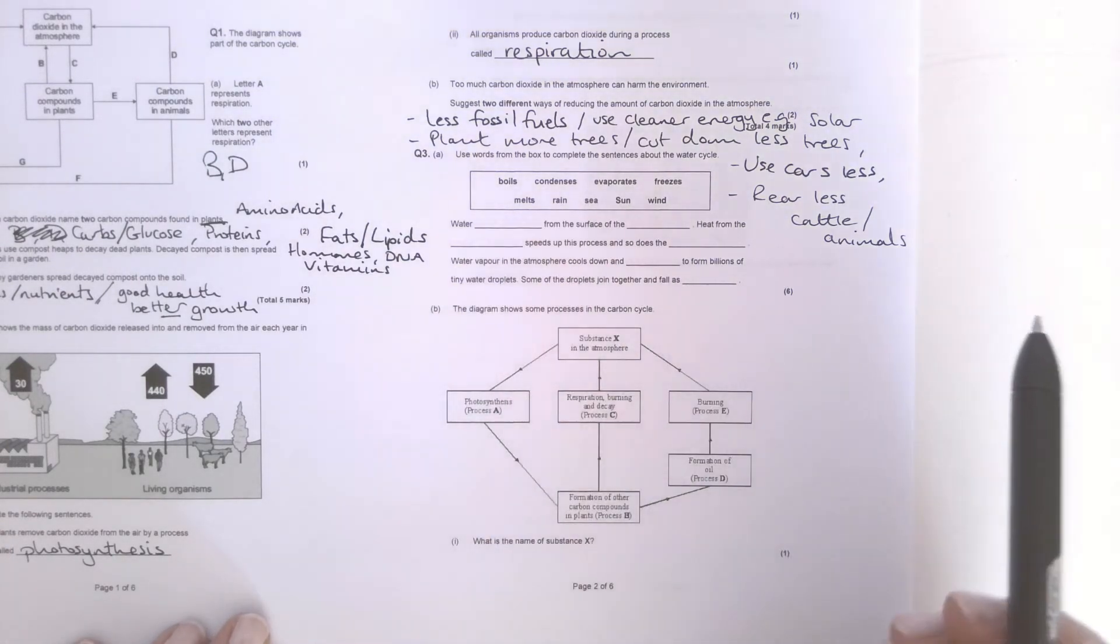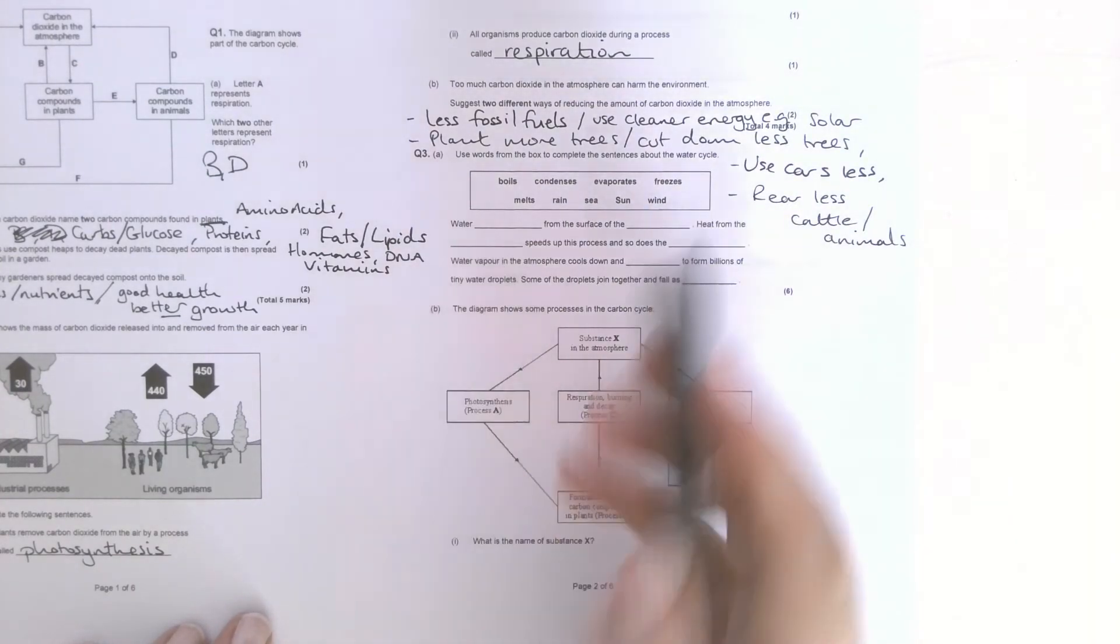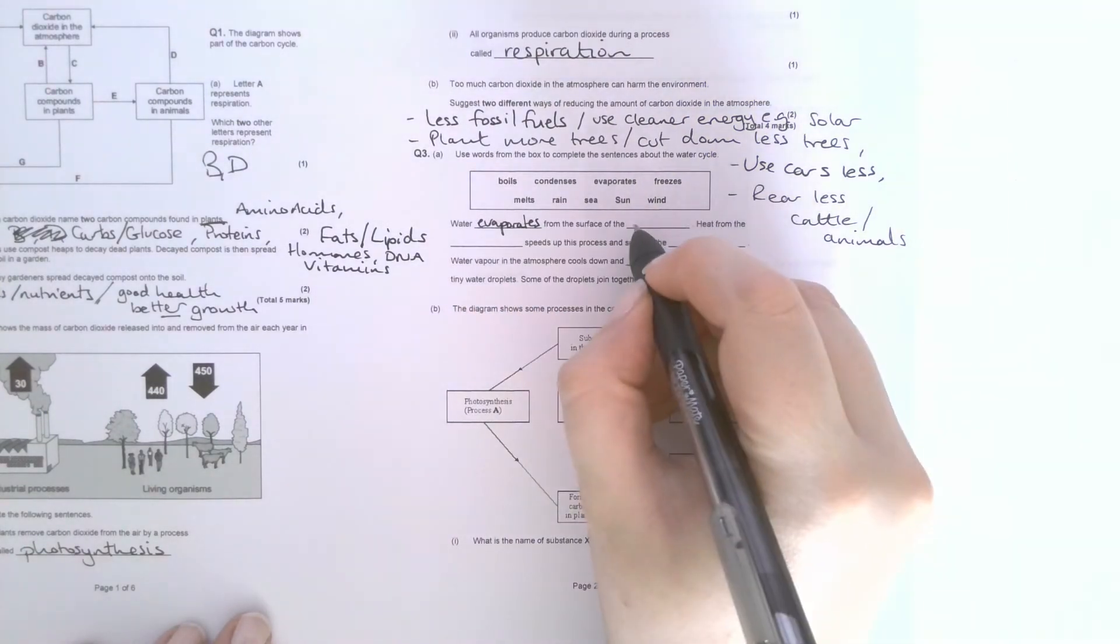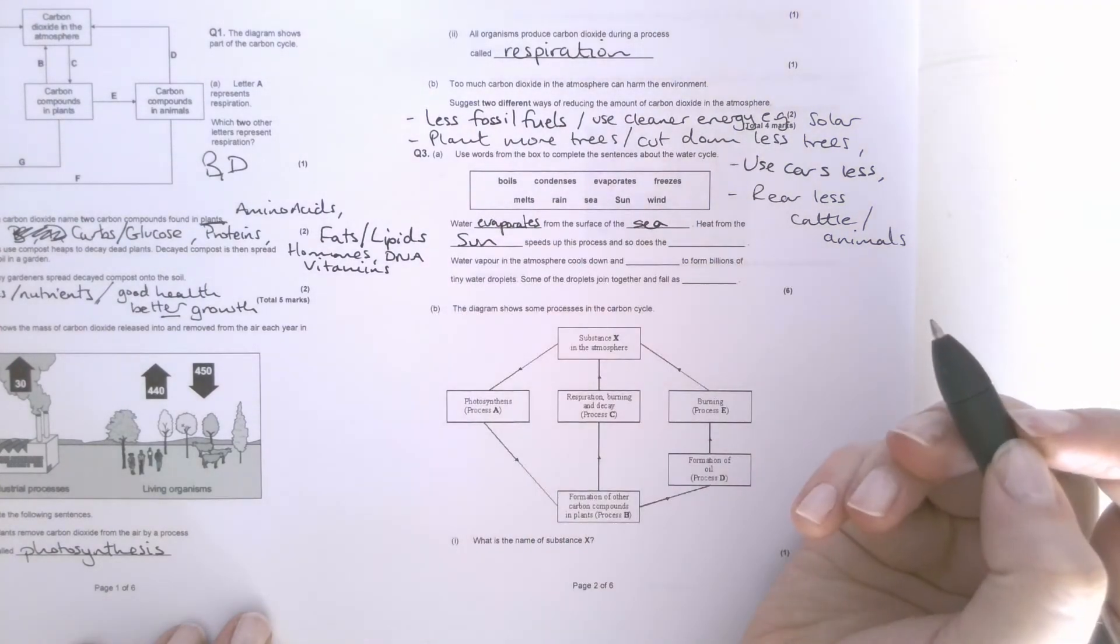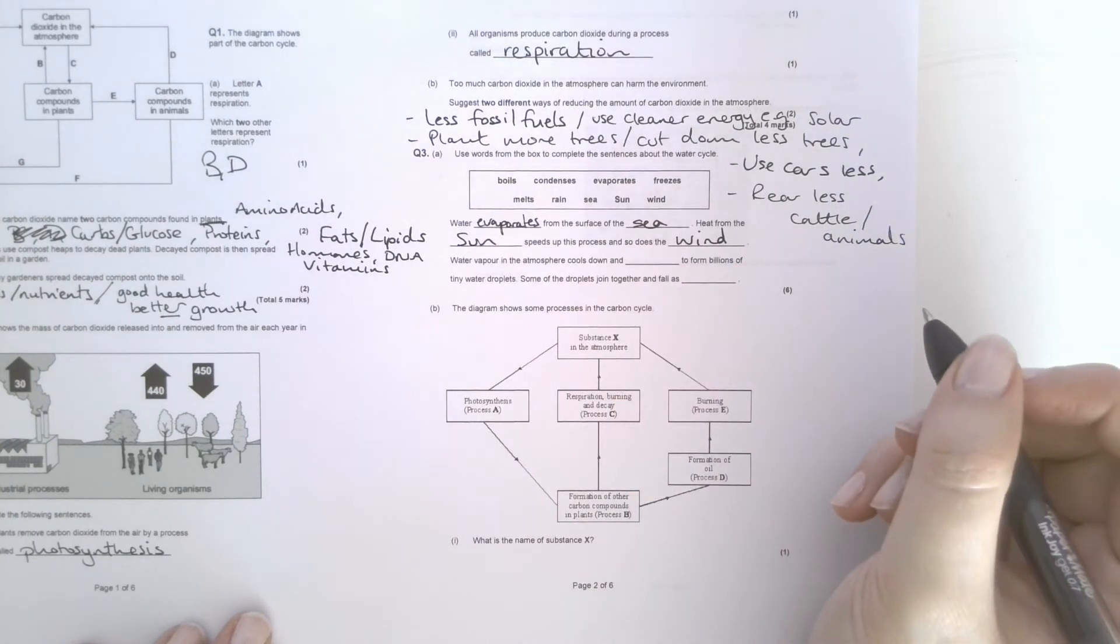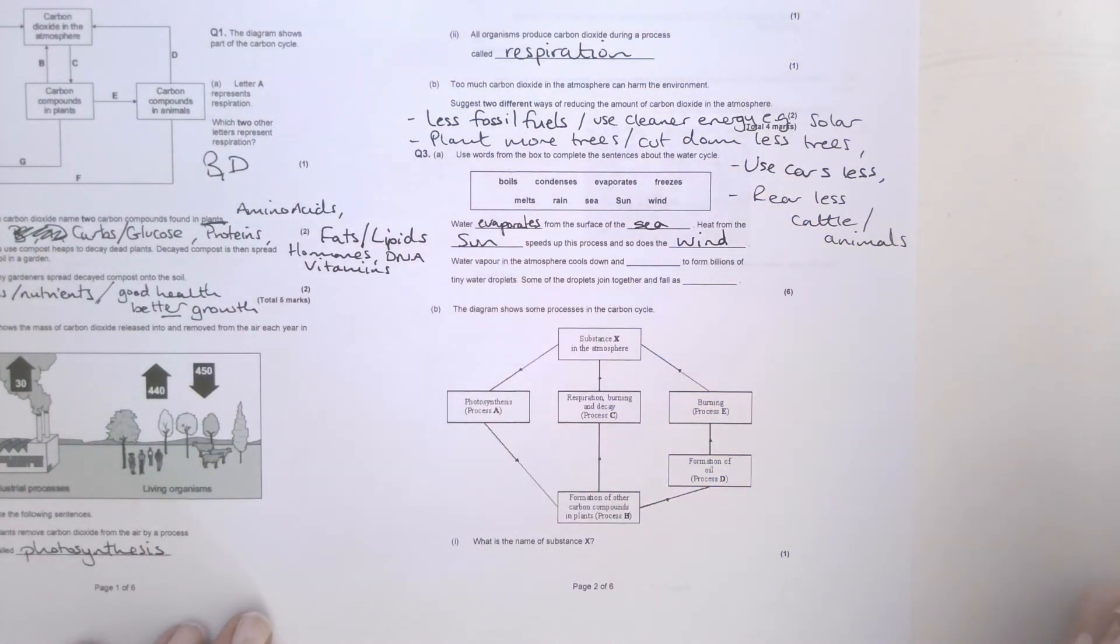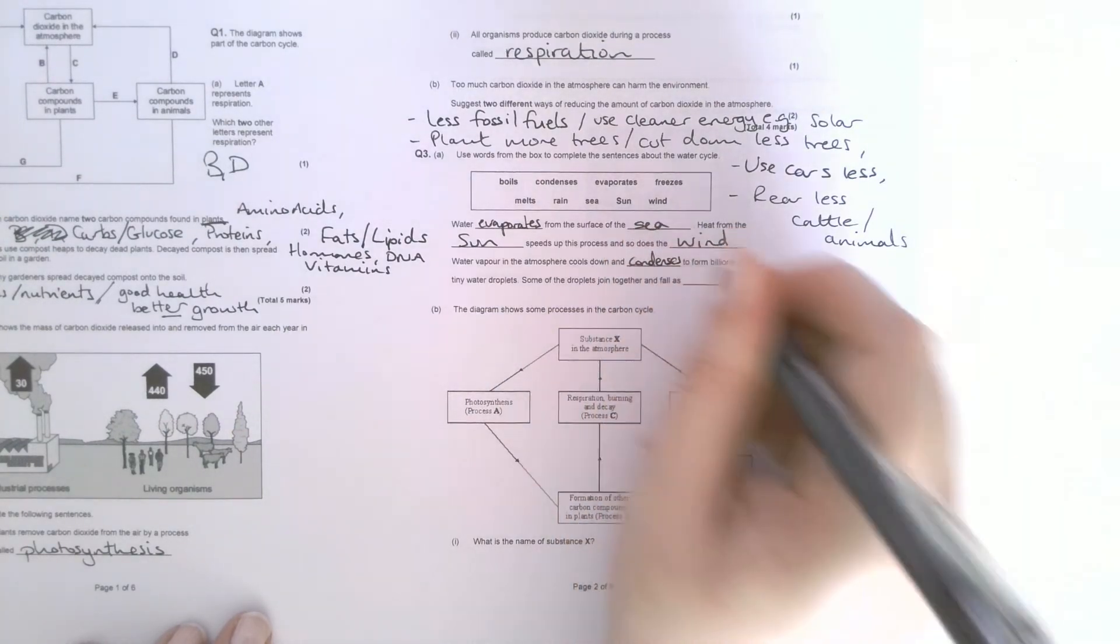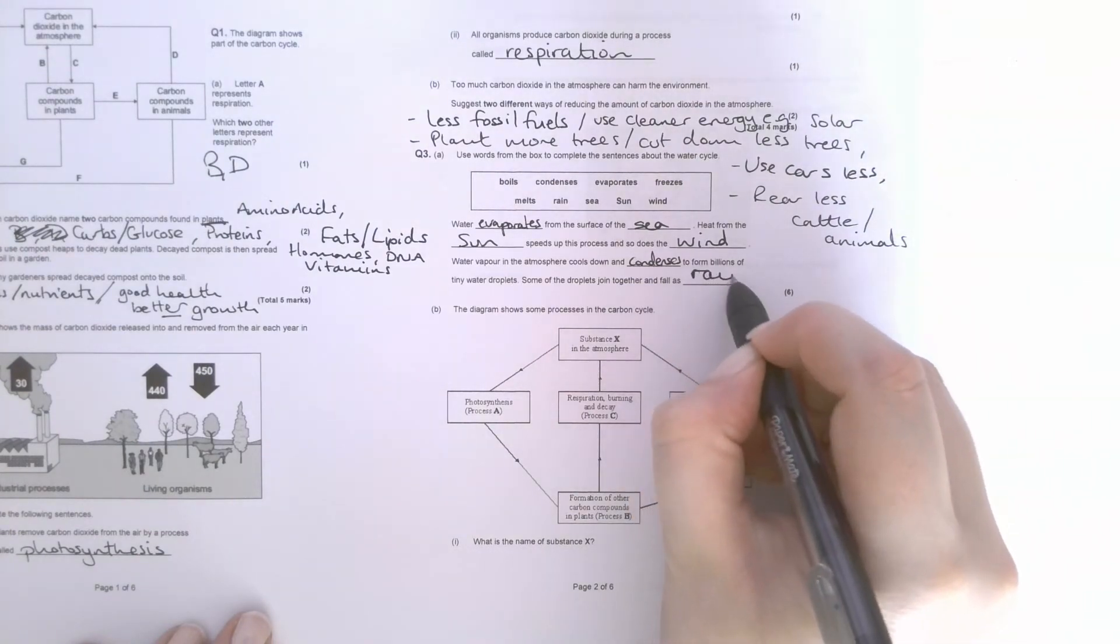Okay, then we have the one and only question I've ever seen on the water cycle, hence why it's in here. Water evaporates from the surface of the sea. Heat from the sun speeds up this process, and so does the wind. Wind makes water evaporate quicker because it blows all the water vapor away. Water vapor in the atmosphere cools down and condenses to form billions of tiny water droplets. Some of the droplets join together and fall as rain.